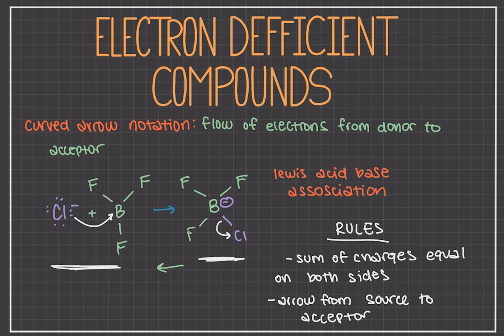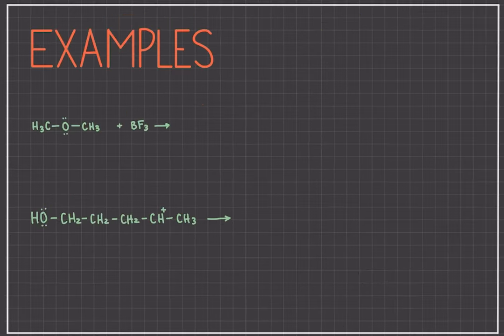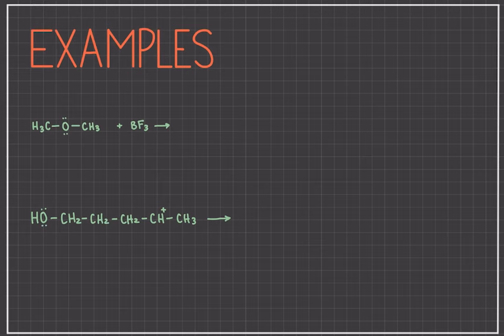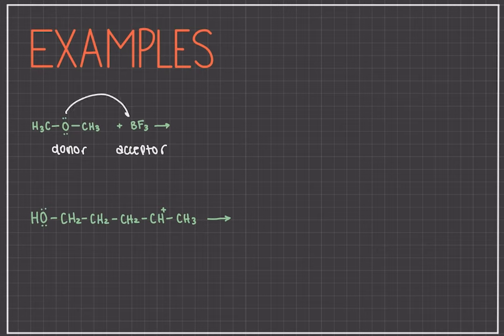In more videos, we will get into different types of reactions and more complicated electron movement. So now let's do some examples. In problems like these where we are trying to figure out the product, it's always important to figure out which molecule in the reactants is the donor and which is the acceptor. Here, the only atom with available lone pairs is the oxygen, so that'll be the donor. And as we saw before, the boron in boron trifluoride is electron deficient, so that'll be the acceptor. So an electron pair from the oxygen will bond with the boron on the boron trifluoride to create a bond between the oxygen and the boron, leading to this product.